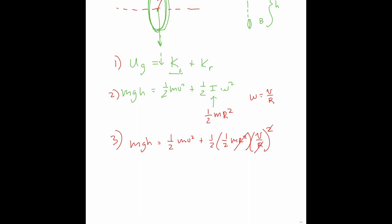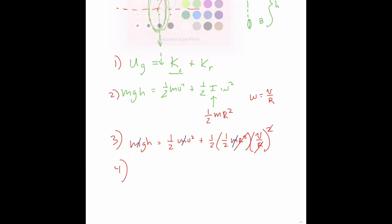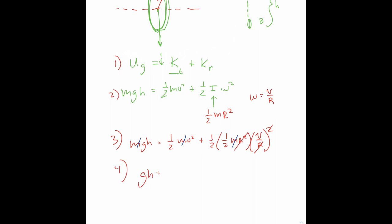MGH equals one half MV squared plus one half of one half MR squared. And then we substitute in place of omega V over R. And omega gets squared. This R gets squared, so it cancels that R squared. So now we've got in step four, there's an M that appears in every term. Cancel, cancel, cancel. And we have GH equals one half V squared plus one fourth, one fourth V squared. Or in other words, we have three fourths V squared.